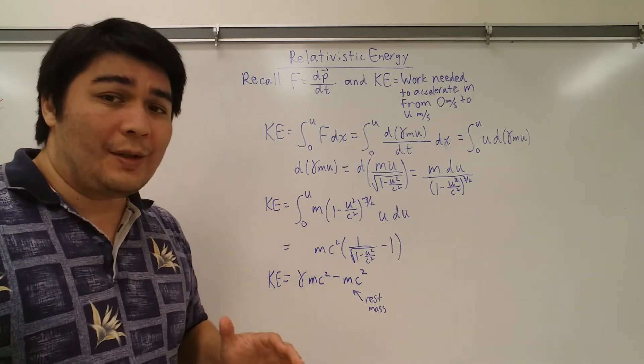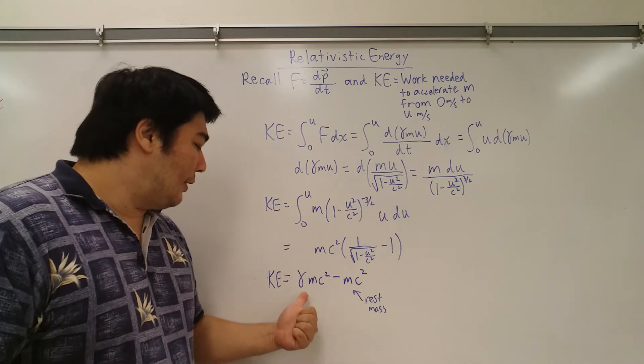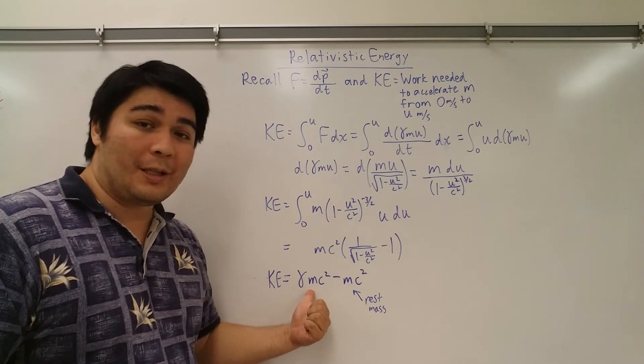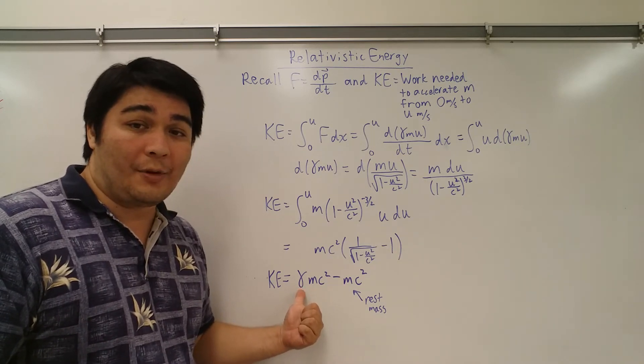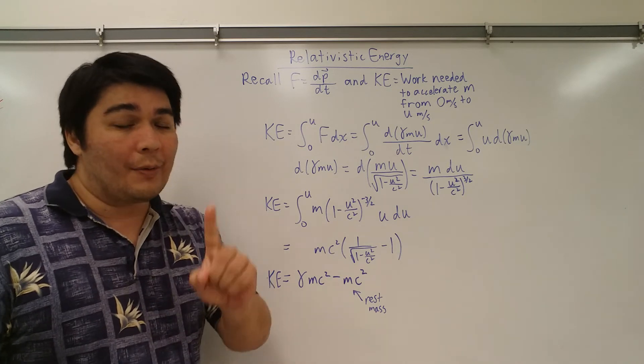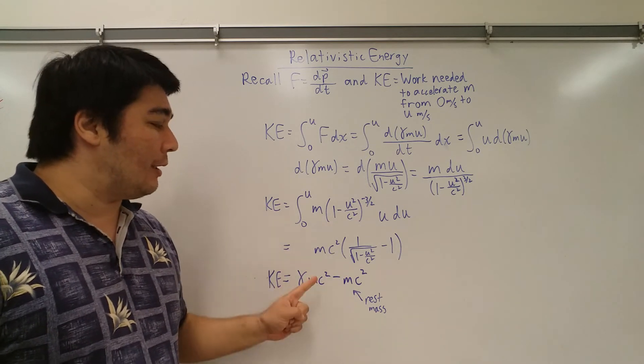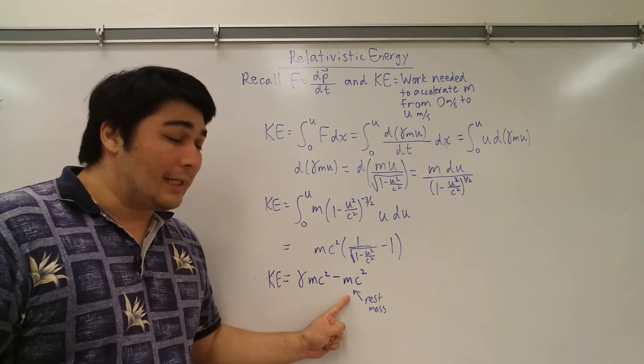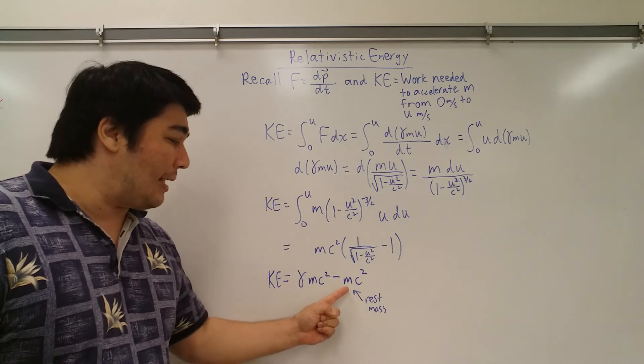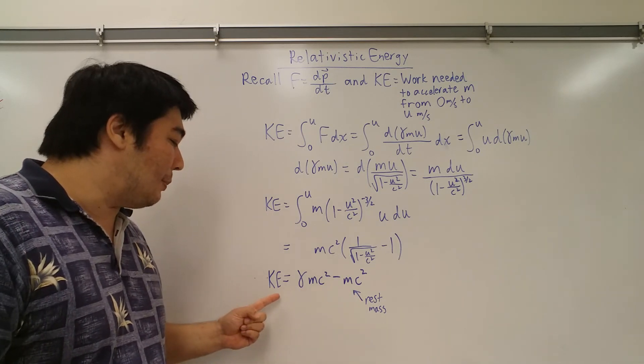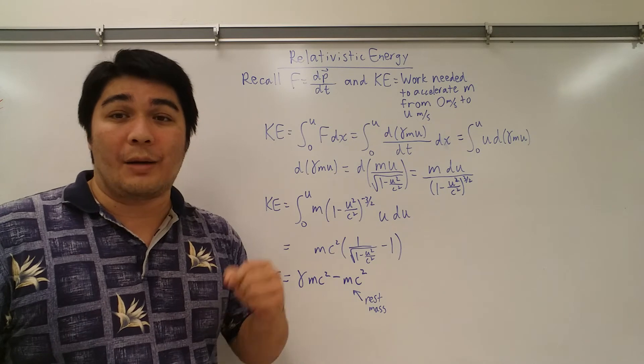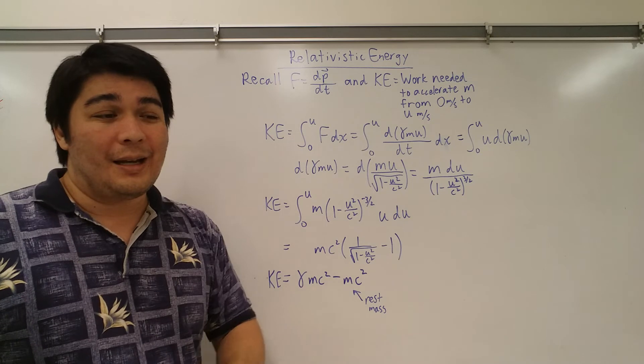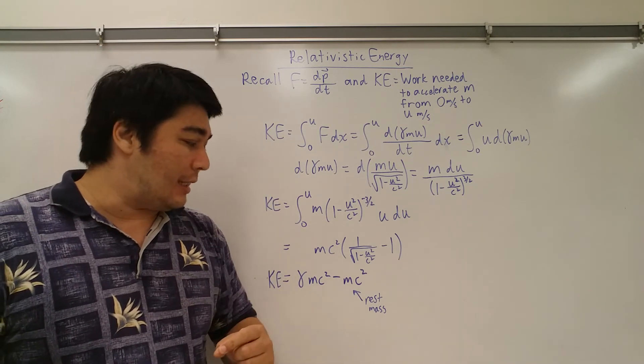So when you have relativistic kinetic energy, it'll be this one. So this one will depend on speed because obviously the gamma function does depend on speed. However, because we took an integral and because there was an initial condition in there, that actually gives you this concept of what's called rest mass. I could actually have added mc squared to both sides of the equation to put it over here, which would have told you that the kinetic energy at relativistic speeds is gamma mc squared, but there is a rest mass, a rest energy in there.